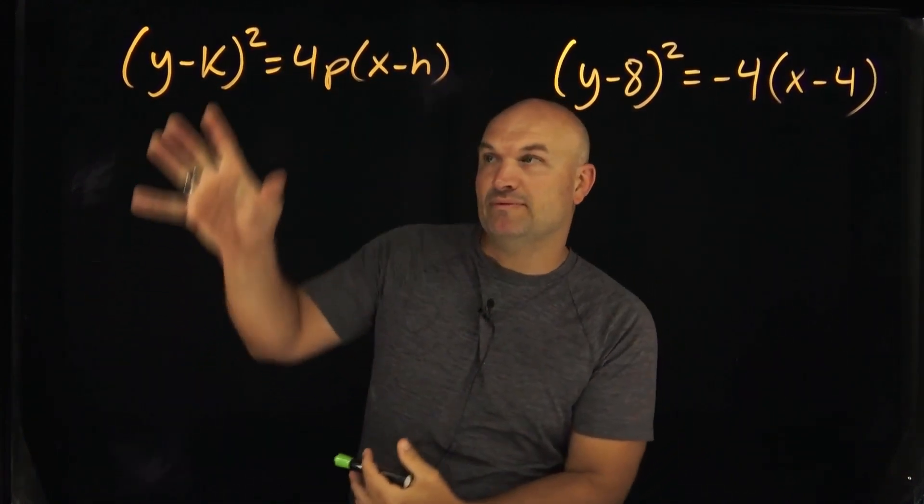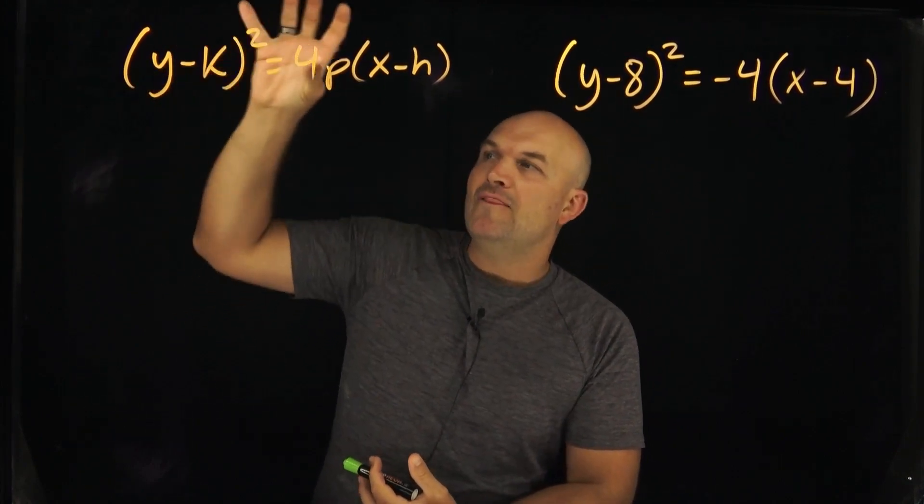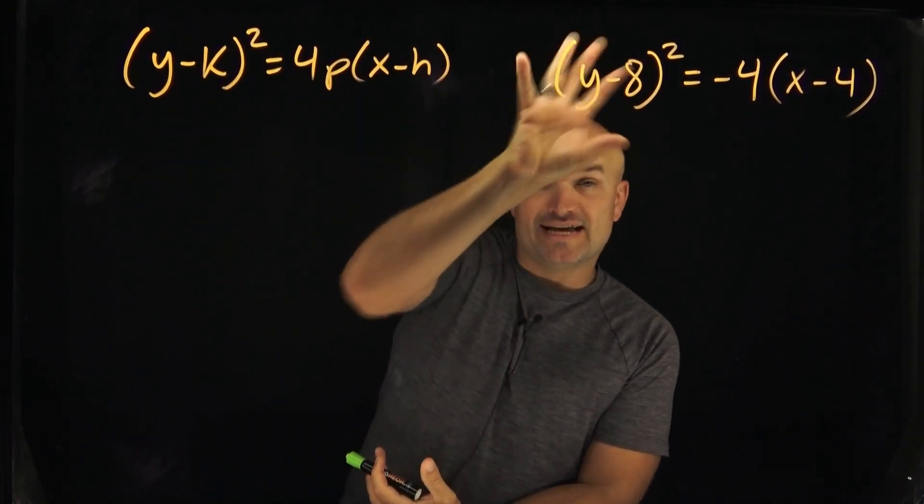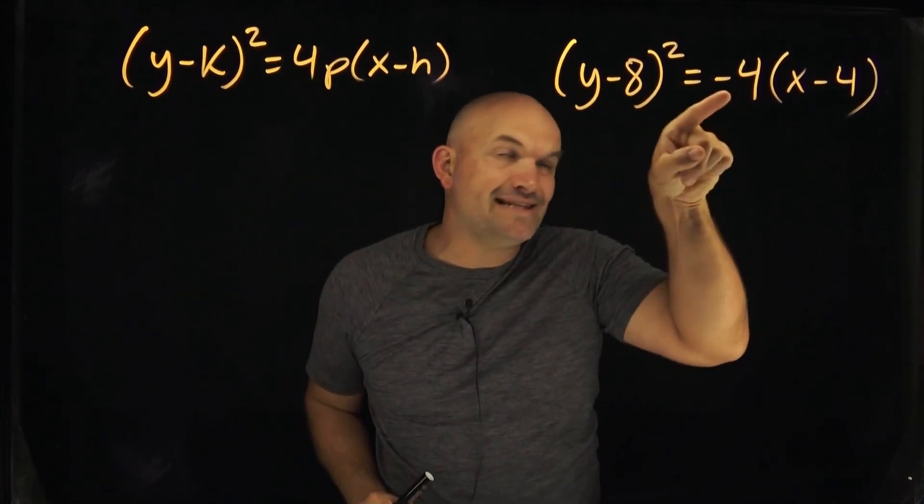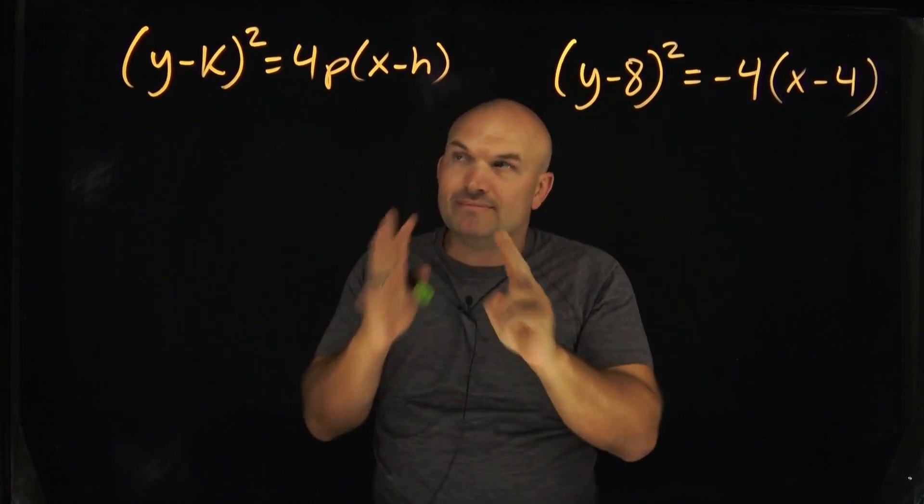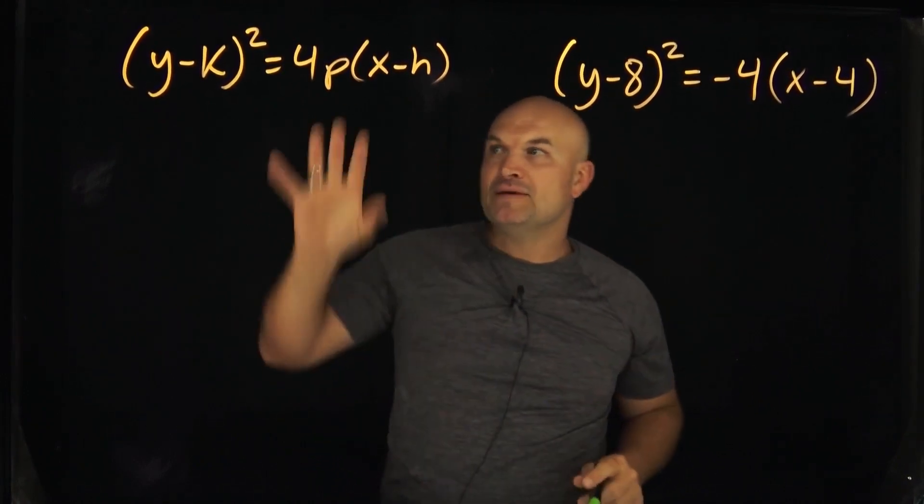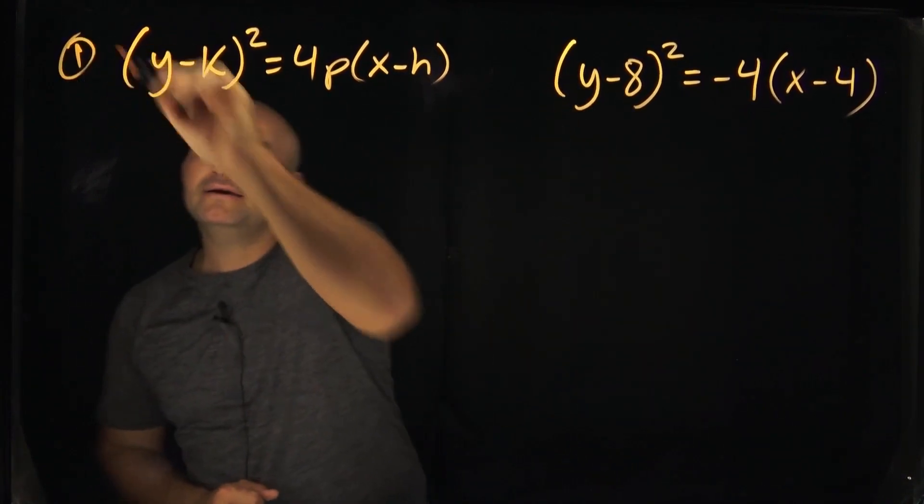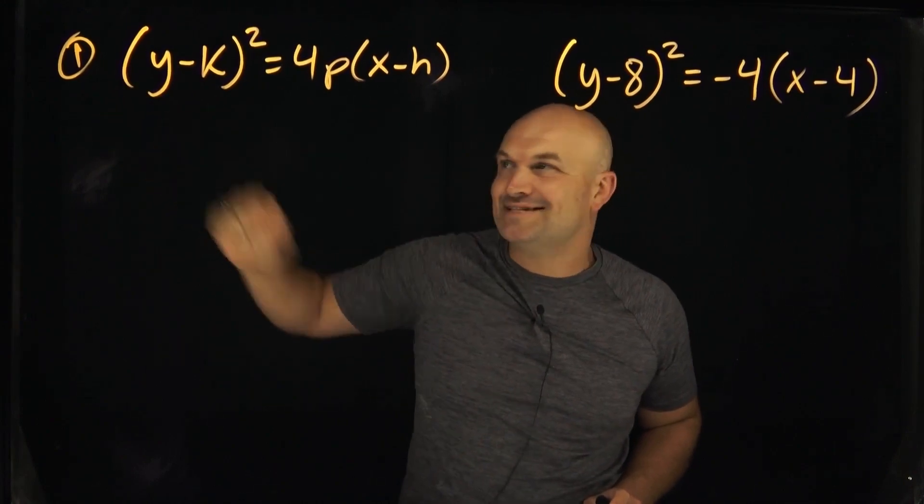Okay, so this is all super important because we want to make sure whenever we start to graph or start identifying the parts that our squared term is isolated, which in this case you can see that it is, and then also that I factored out this 4p, this value. You can see that that is the case as well. Those are two little mistakes that a lot of times students will forget once they start graphing. So the first step is to identify your standard equation, and make sure obviously it's already in standard form, but we didn't have to worry about it in this case.